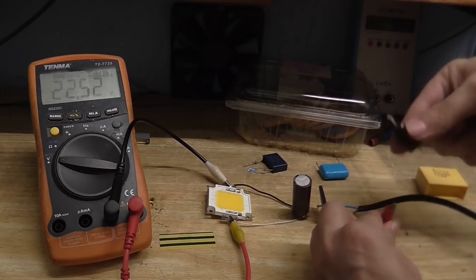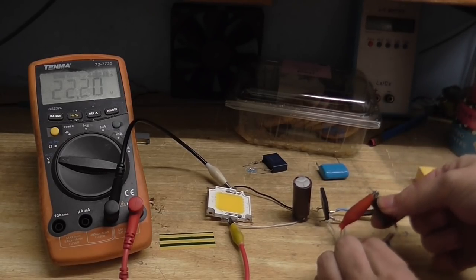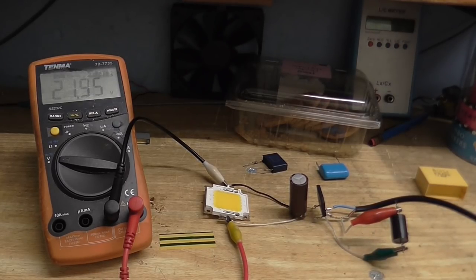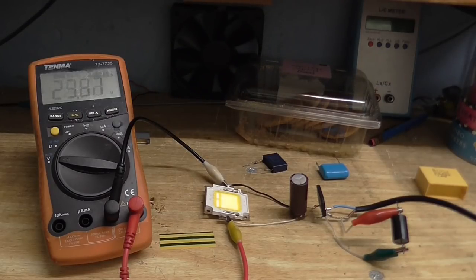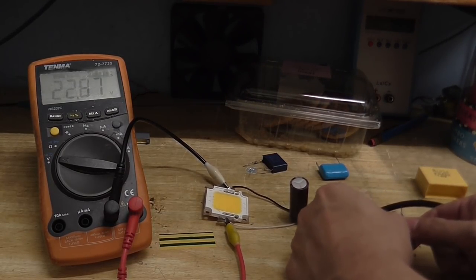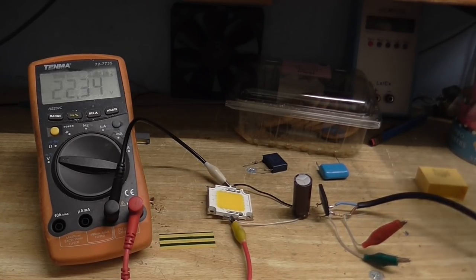OK. One microfarad. 400 volts. That seems pretty good. Nothing's giving us the full 31 volts, though. But that might be the choke limiting that current.